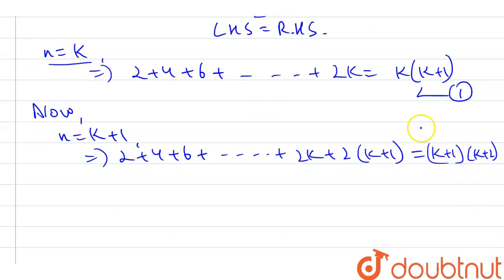From equation 1, we can substitute this. So k(k+1) + 2(k+1) = (k+1)(k+2).